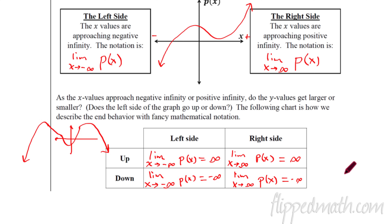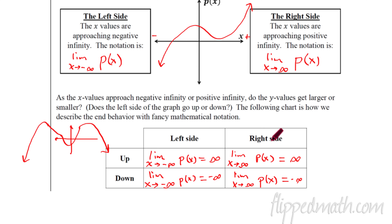Some things to point out: if you're going left, X is going to negative infinity. If the function goes up, it's infinity. If you go to the right, X is approaching infinity. These are X values, and these are Y values over here. That's our fancy notation.